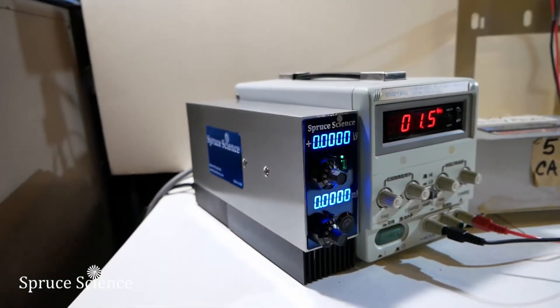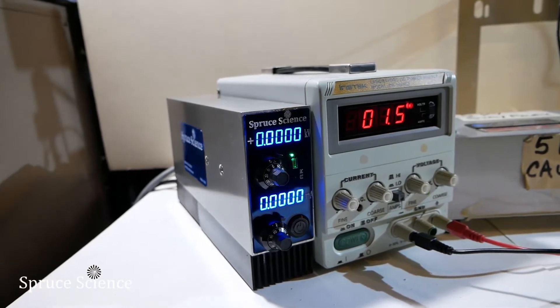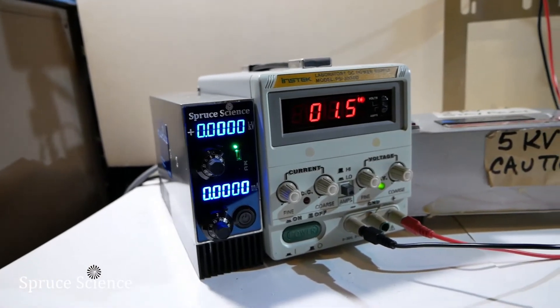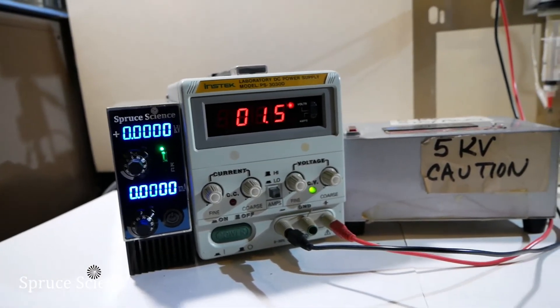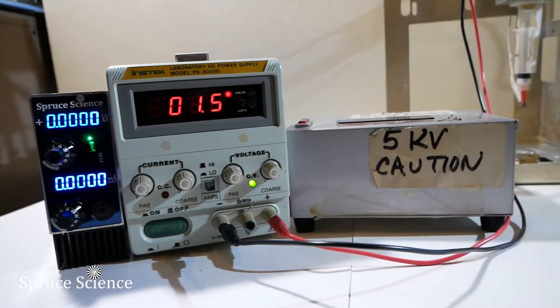On the left is the high voltage power supply from Spruce Science. The middle unit powers the syringe pump. The right side generates AC high voltage at 60 hertz.